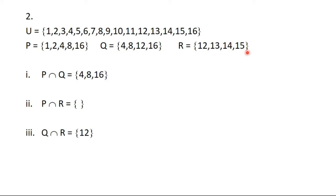Part iii: Q intersection R means we are looking at members that are in Q and at the same time in R. That member is 12 — 12 is in Q and at the same time in R.